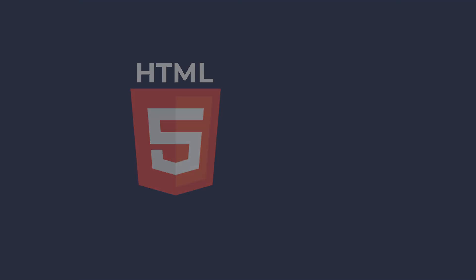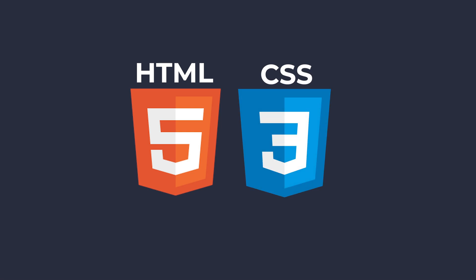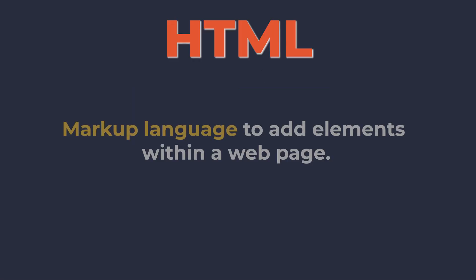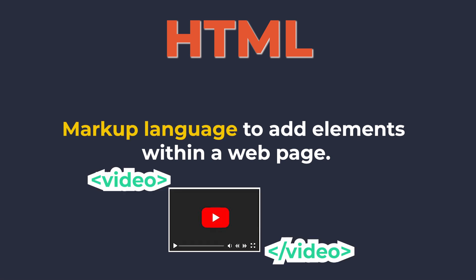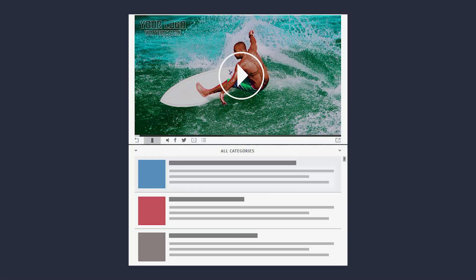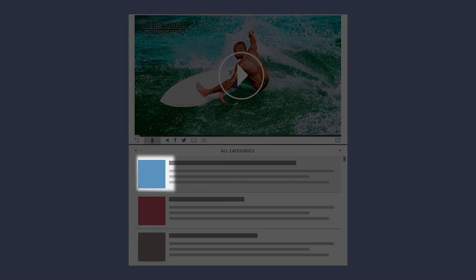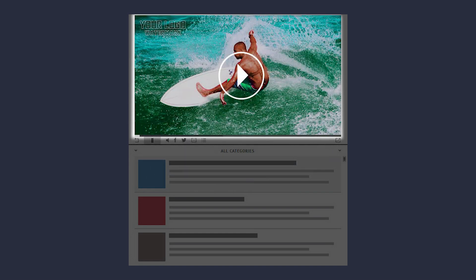Now let's briefly explain HTML and CSS for beginners. HTML is a markup language, so it uses tags to define or add elements within a webpage. Each element on a webpage — like paragraph, image, link or hyperlink, video, etc. — is displayed with corresponding tags. So HTML defines the structure of a webpage.